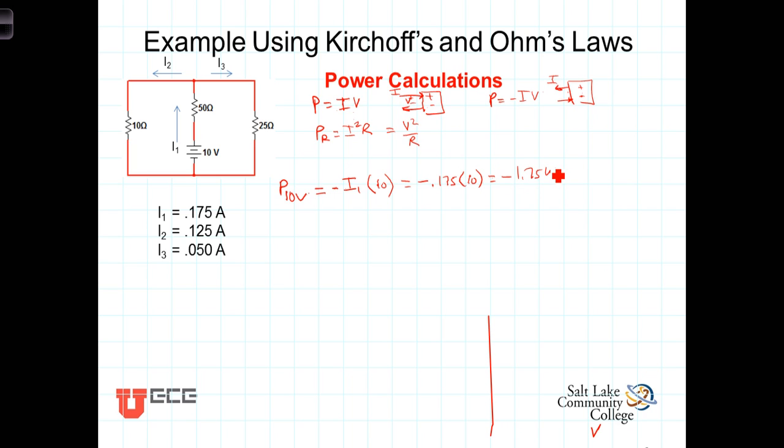The power associated with a 10 ohm resistor, let's call that P sub 10 ohms, is going to equal I squared times R. Well, the I associated with this is I2, so it will be positive I2 squared.